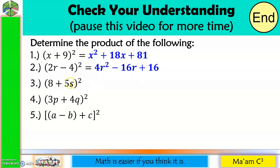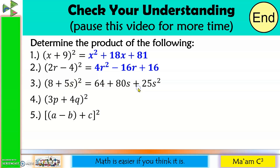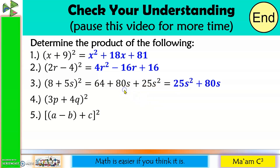Number 3: 8 squared is 64. Copy the sign. 8 times 5 is 40; times s is 40s; times 2 is 80s. Plus 5s squared is 25s squared. Let us rearrange: 25s squared plus 80s plus 64.